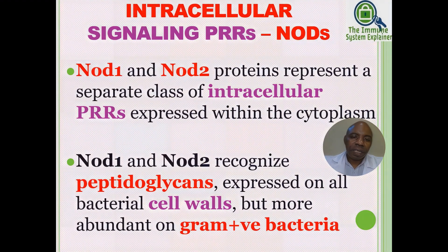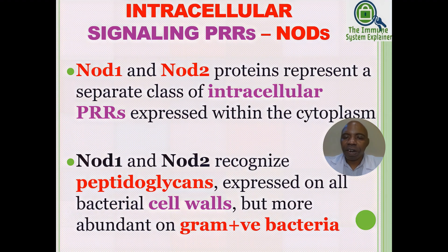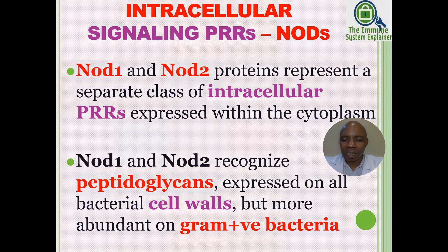The last category of signaling PRRs are intracellular signaling PRRs, otherwise referred to as NODs — or NOD-like receptors. NOD1 and NOD2 proteins represent a separate class of intracellular PRRs expressed within the cytoplasm. NOD1 and NOD2 recognize peptidoglycans expressed on bacterial cells, which are more abundant on gram-positive bacteria.